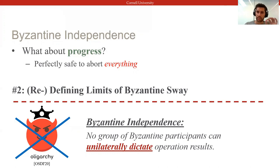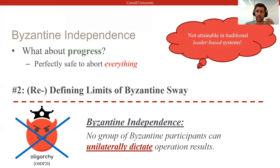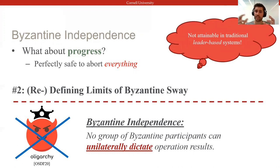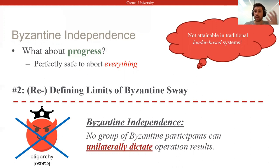This is an important property, and actually one that traditional systems relying on a leader do not attain, because the leader has undue control over transaction orderings and is able to inject or front-run transactions to influence results. In Basel, we strive to meet Byzantine independence and sidestep concerns about ordering and fairness altogether.